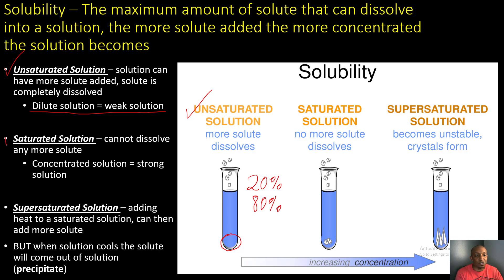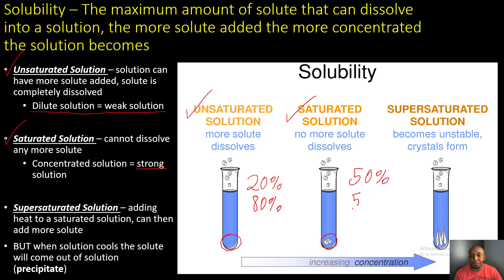Now let's take a look at our saturated solution. It cannot dissolve any more solute and would be considered a concentrated or strong solution. We can tell because we still have small amounts of solute at the bottom that have not dissolved. The ratio for this is more like 50% solute to 50% solvent, which is more concentrated than our unsaturated solution.